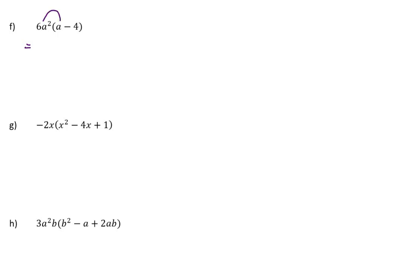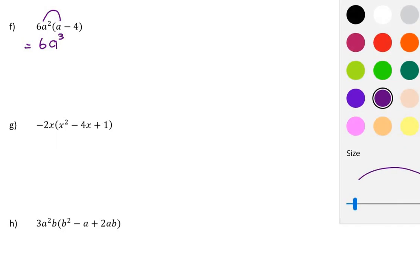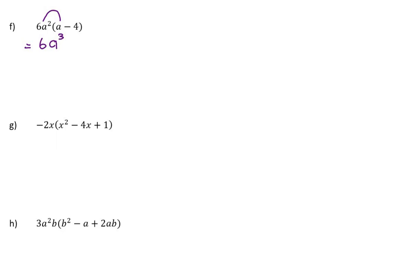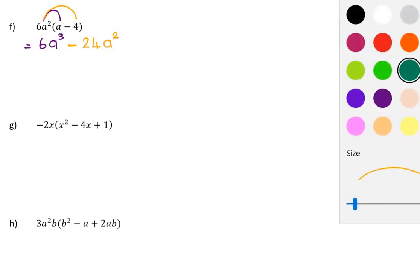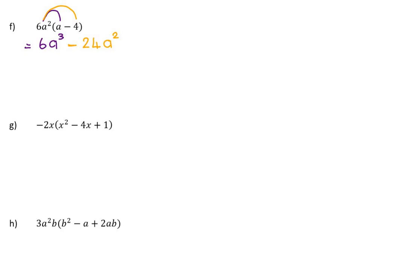Multiply 6a squared by a — well, a squared times a, multiply powers of the same base, add exponents. And then multiply 6a squared by negative 4. Remember you're not adding so you don't have to worry about like terms. A positive times a negative is a negative. 6 times 4 is 24, and a squared are the only variables there. Those aren't like terms because it's a cubed and a squared.